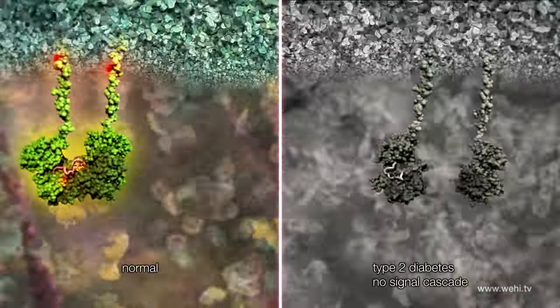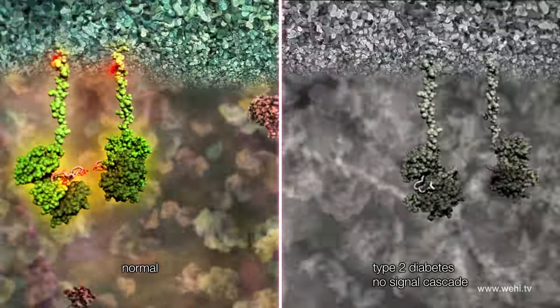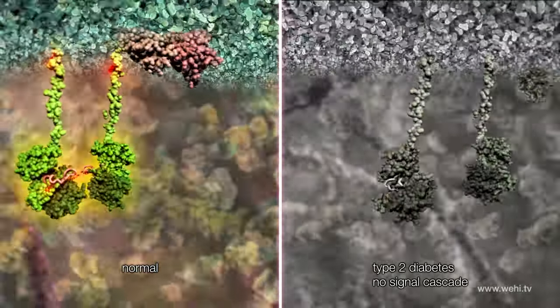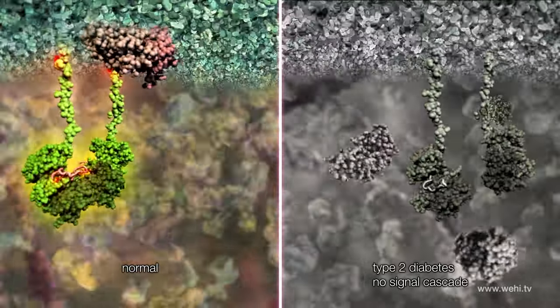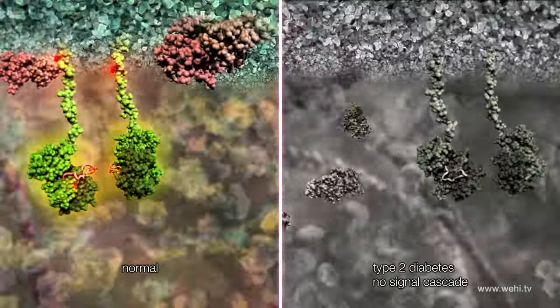In type 2 diabetes we believe insulin binds to its receptor normally but the signal is not sent into the cell and the signal cascade does not develop. This is known as insulin resistance.